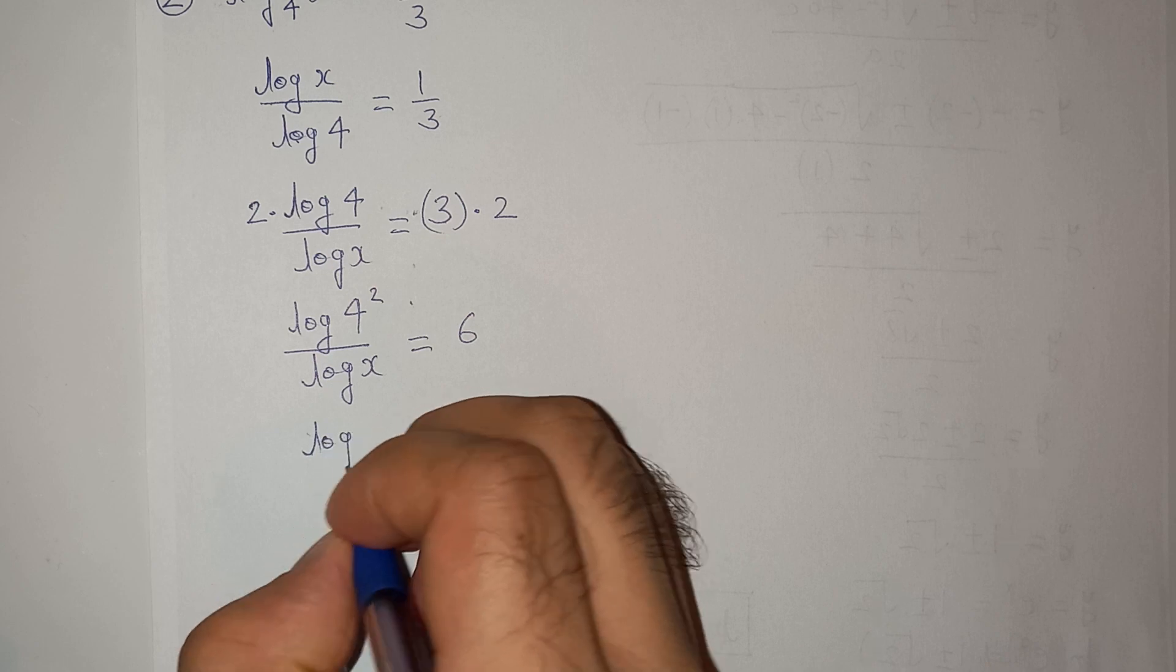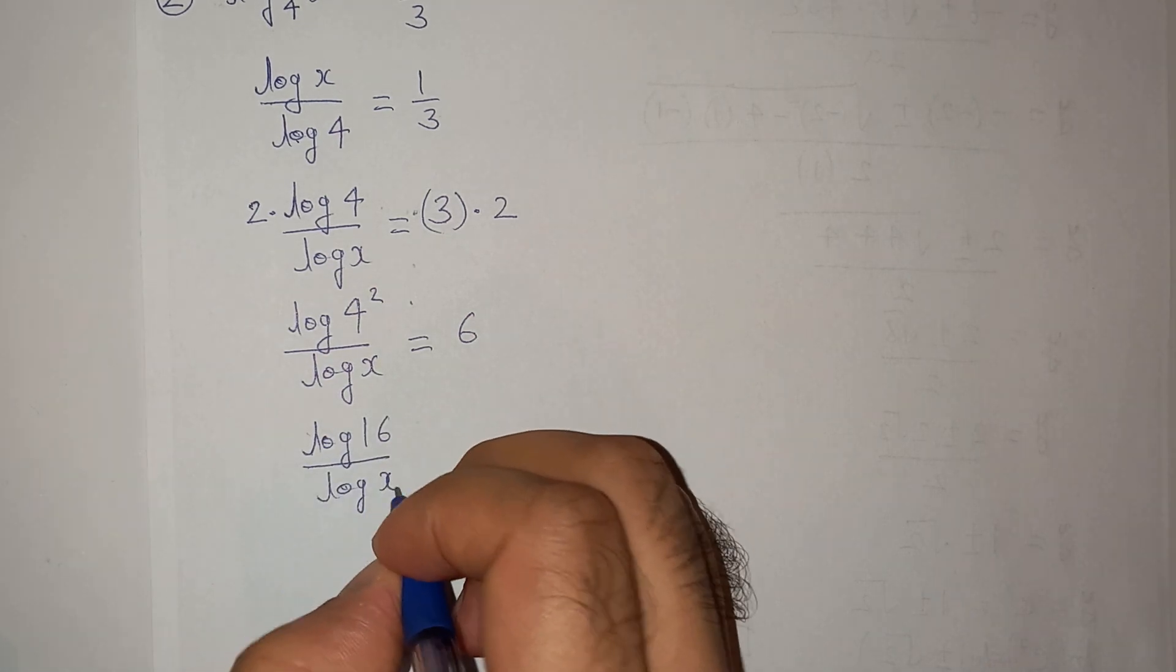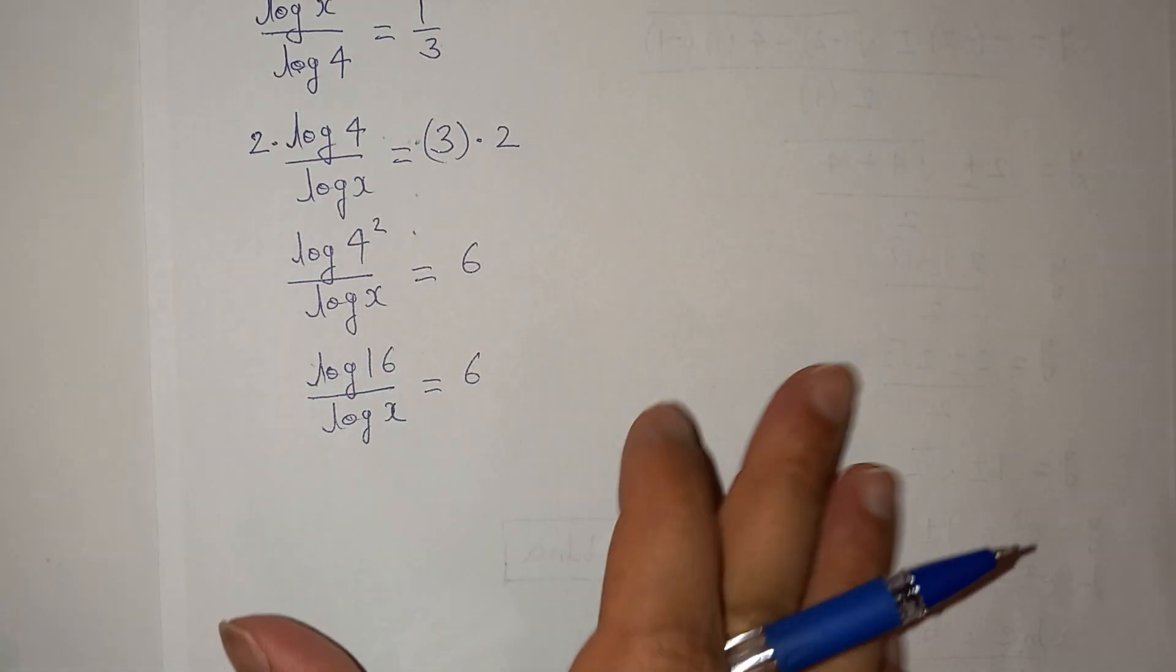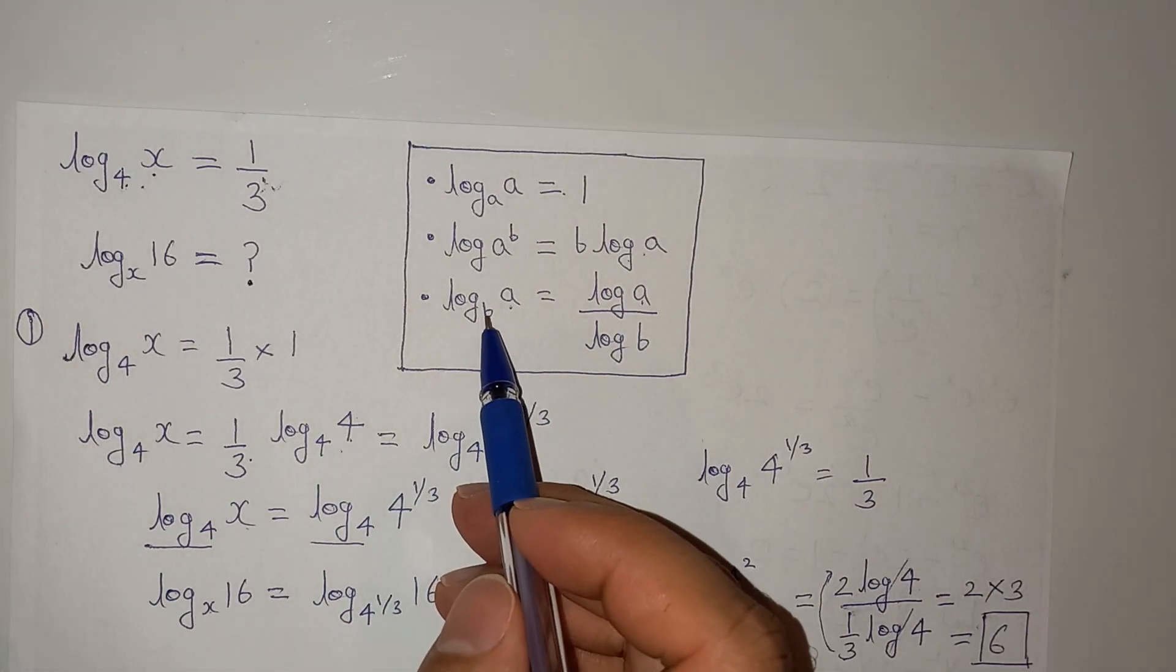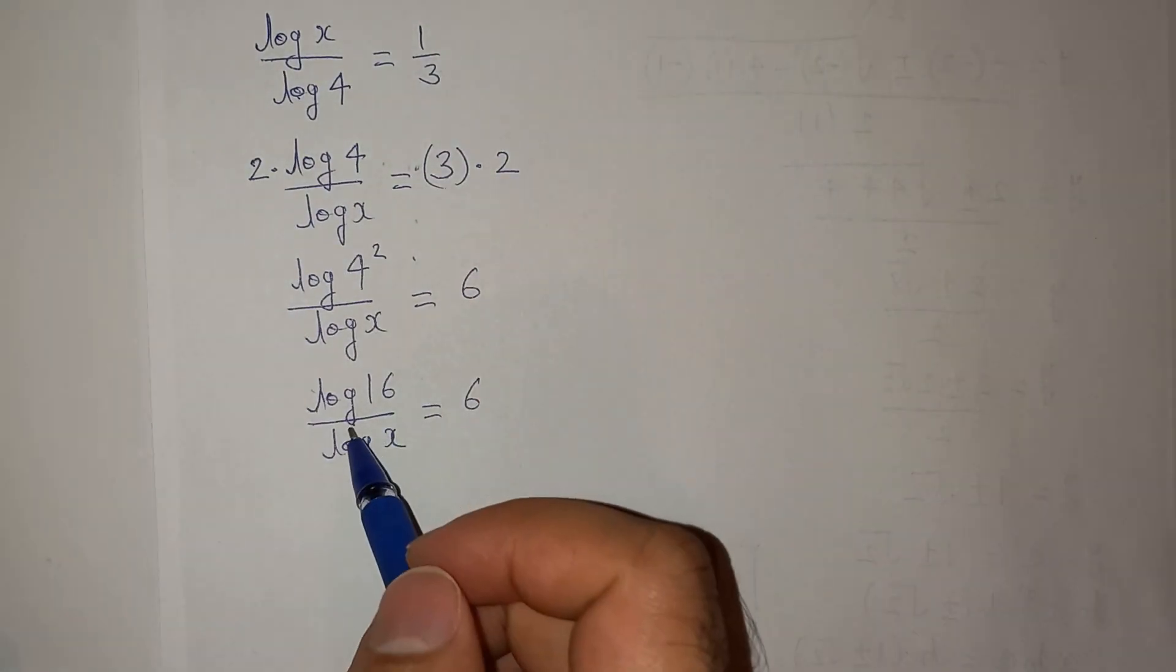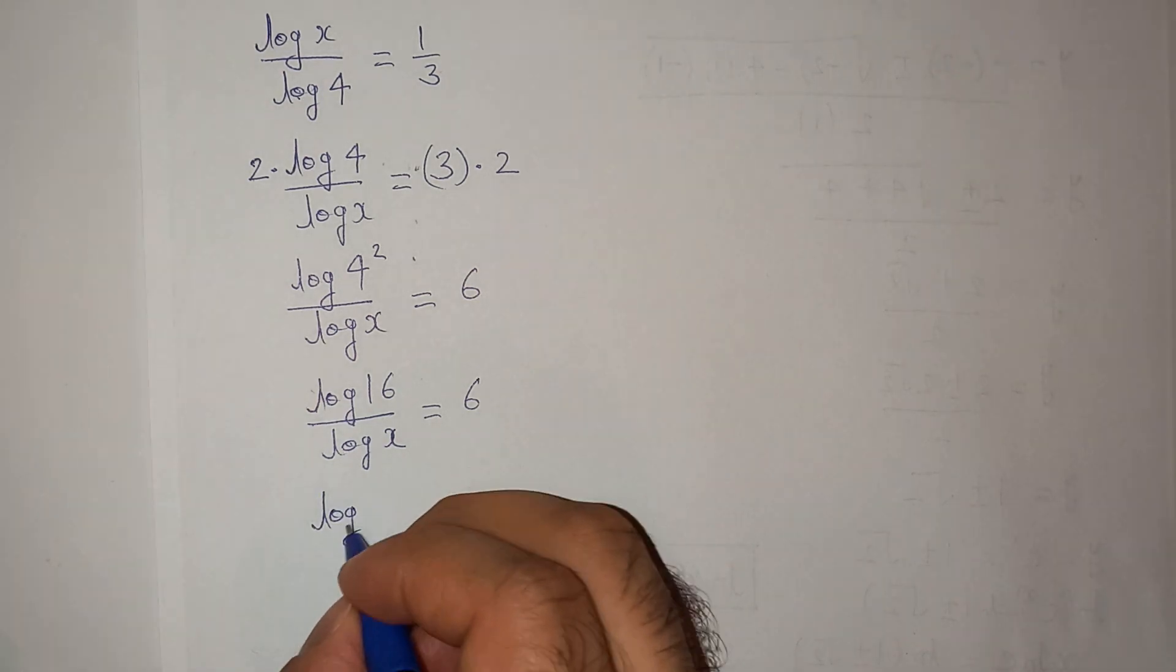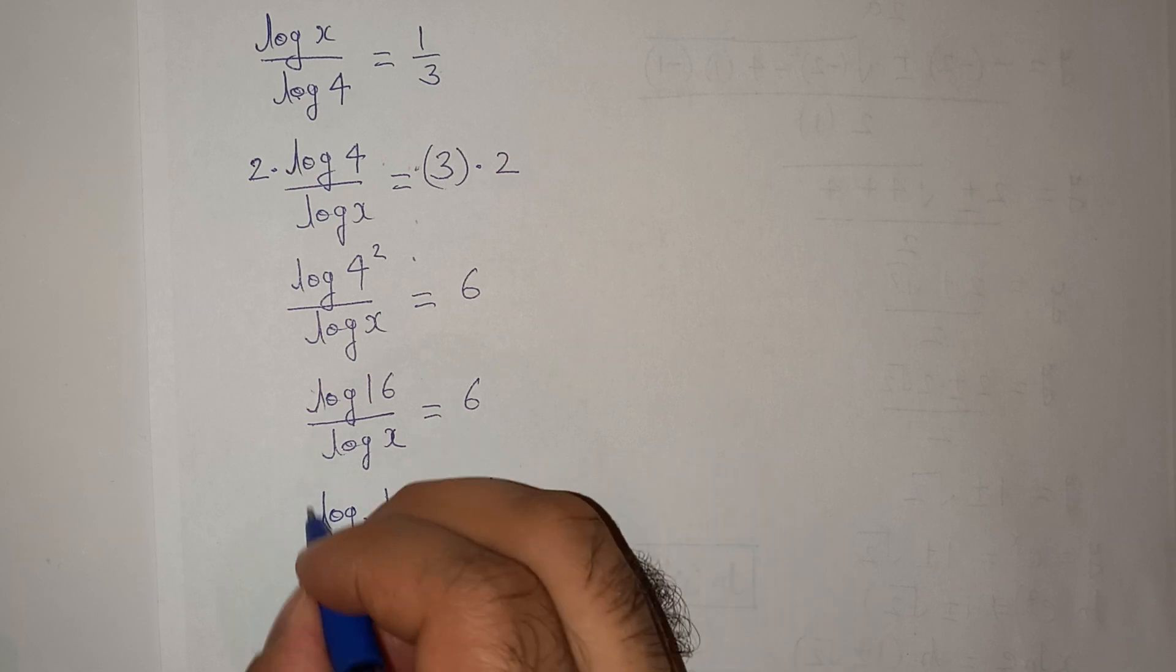So finally, this is log(16)/log(x) = 6. Now, as per the change of base formula—log_b(a) = log(a)/log(b)—I can say that this will be log base x and the number is 16, equals 6.